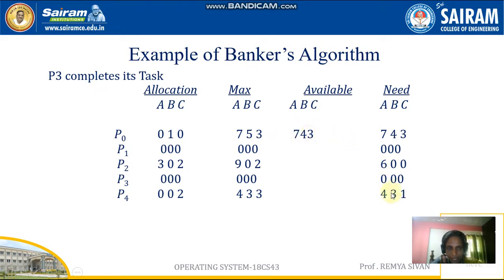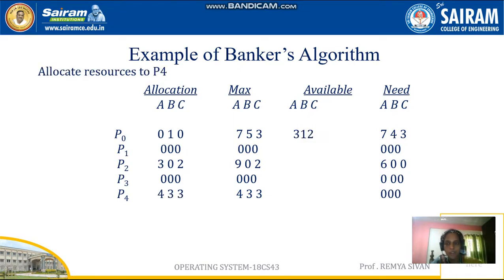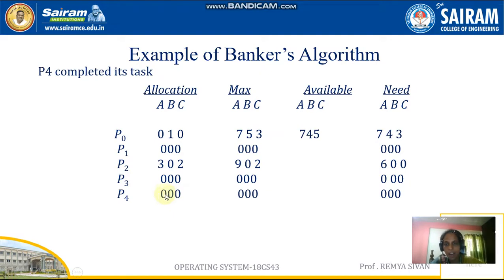We go in order — next is P4, which requires 4A, 3B, 1C. We have 7A, 4B, 3C available — yes, we have enough. So we give resources to P4. After P4 gets the maximum resources, the current available becomes 3, 1, 2. P4 completes its task and releases resources. So far, three processes have completed: P1, P3, P4.